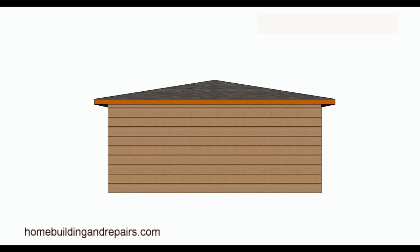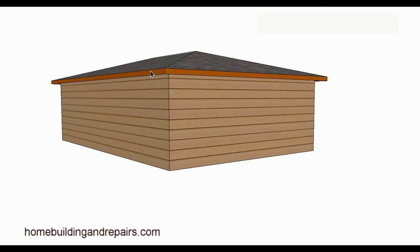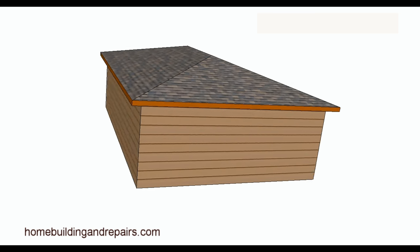Next up on the list is the hip roof, and I believe it is probably the second most popular design. With the hip roof you're going to have a little more work on the roof — you've got four sides to work with — but the walls are going to be a little less work. If you have an eight-foot building there's a good chance you could do this with a small ladder and you're not going to need any scaffolding.